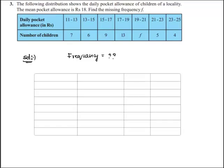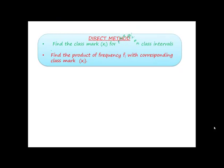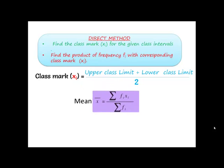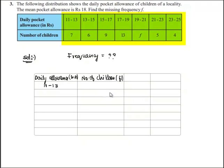Let's write this in tabular form. Daily allowance in rupees and number of children as frequencies. For 11 to 13 there were 7 children, 13 to 15 there were 6, 15 to 17 there were 9, 17 to 19 there were 13, 19 to 21 there were f children, 21 to 23 there were 5, and 23 to 25 there were 4 children.